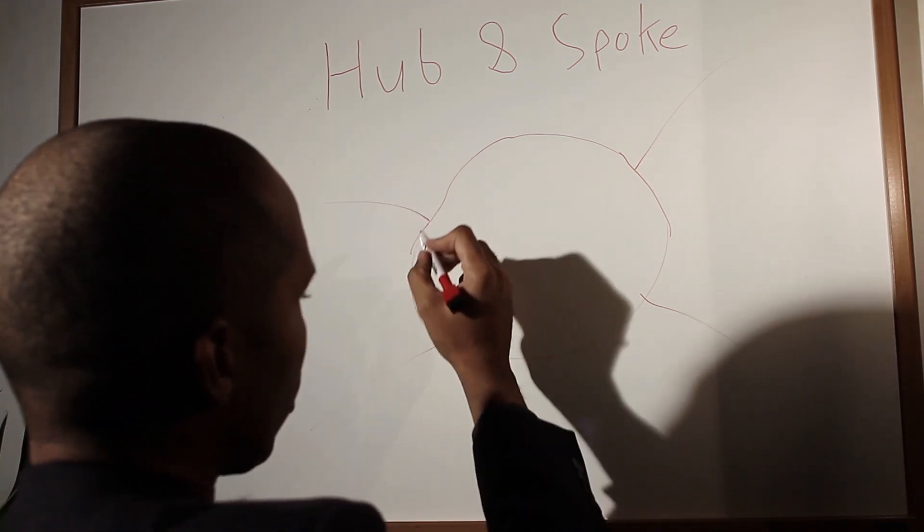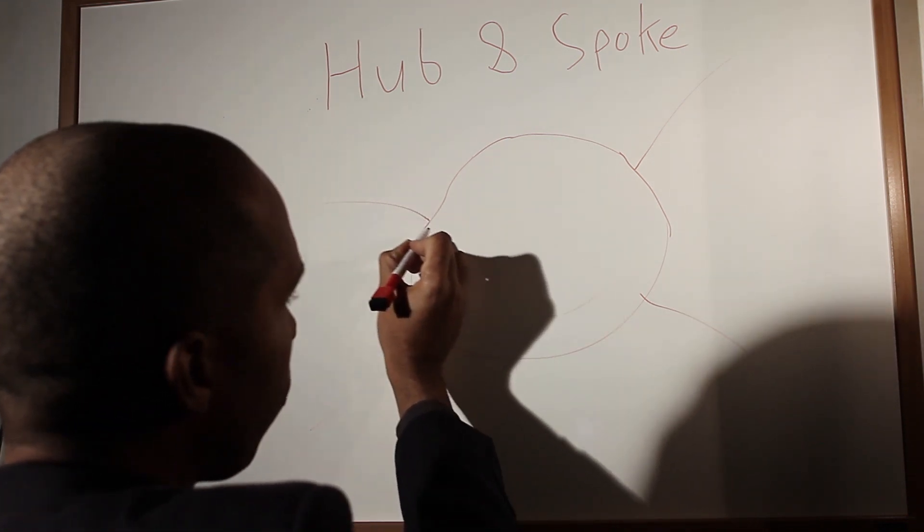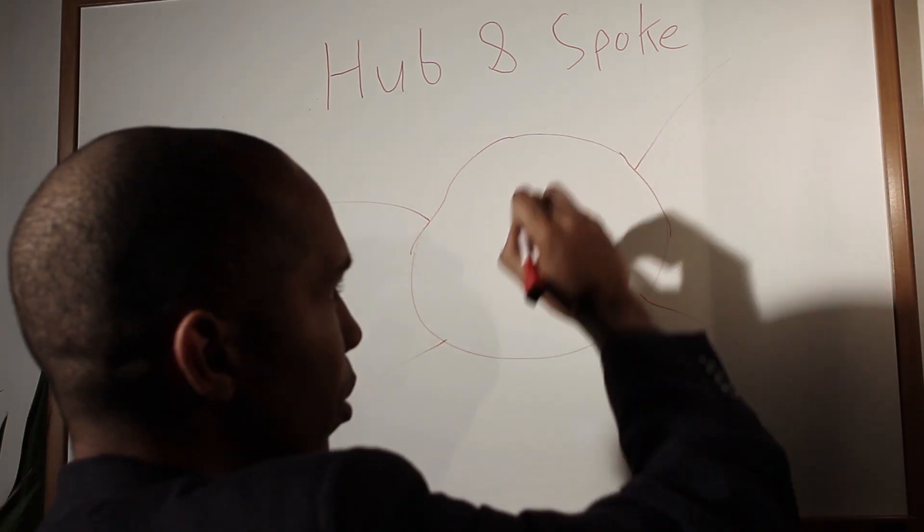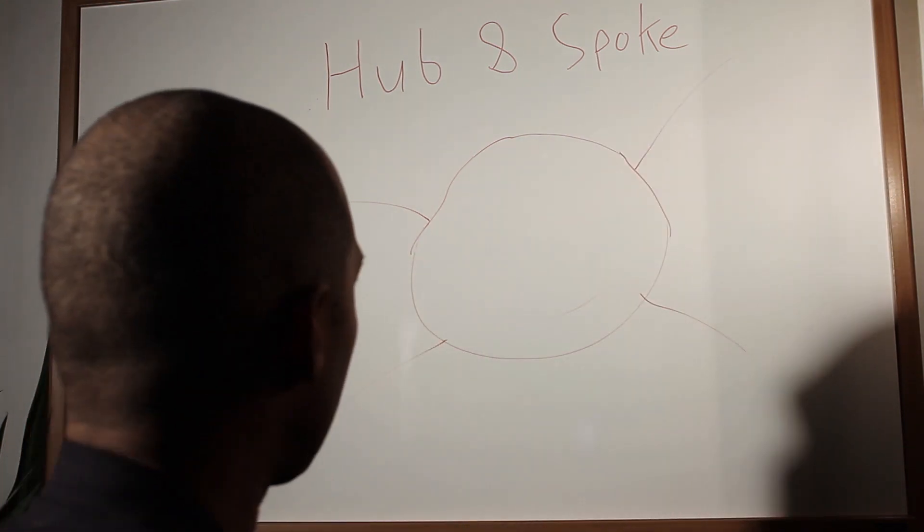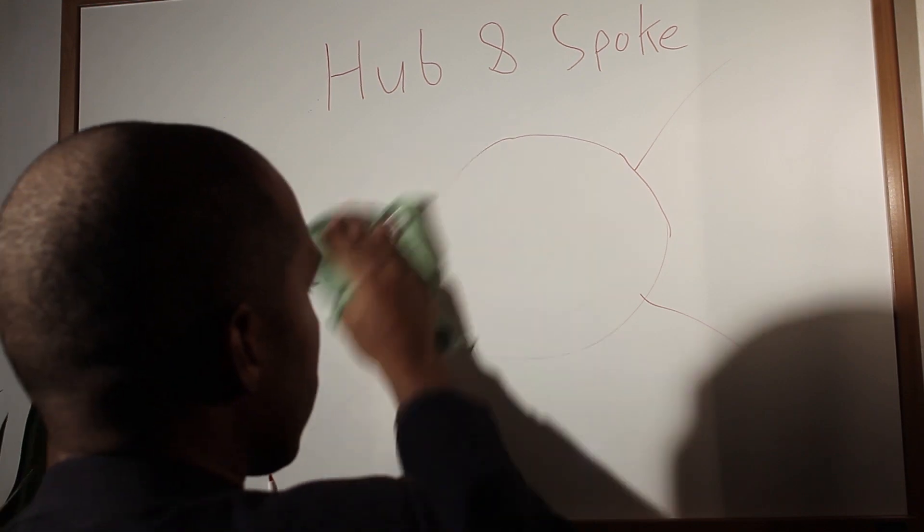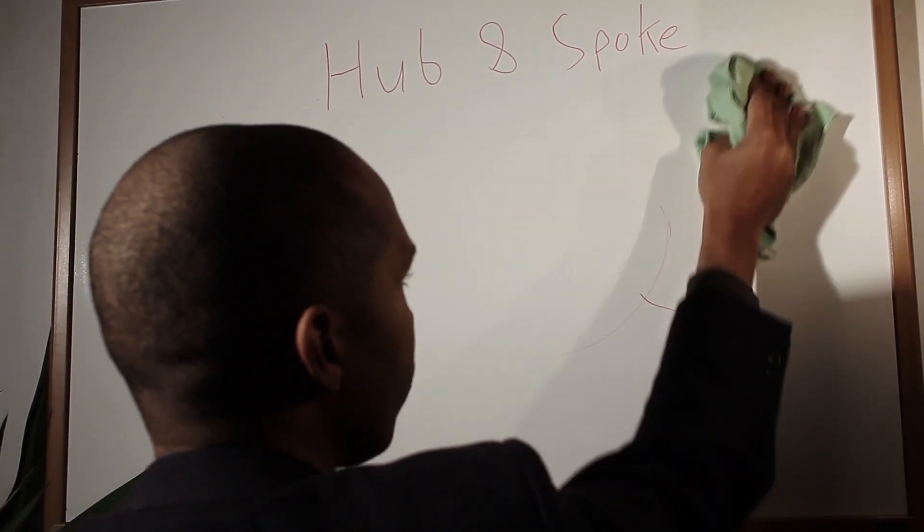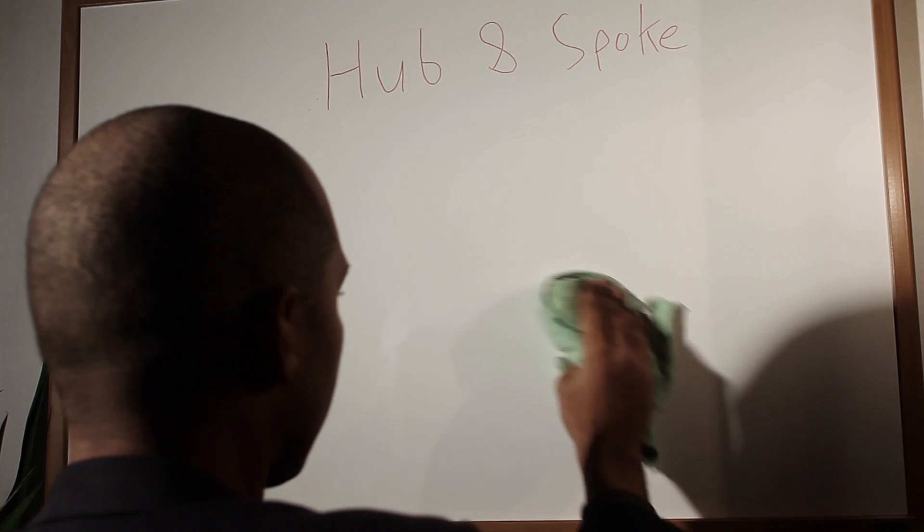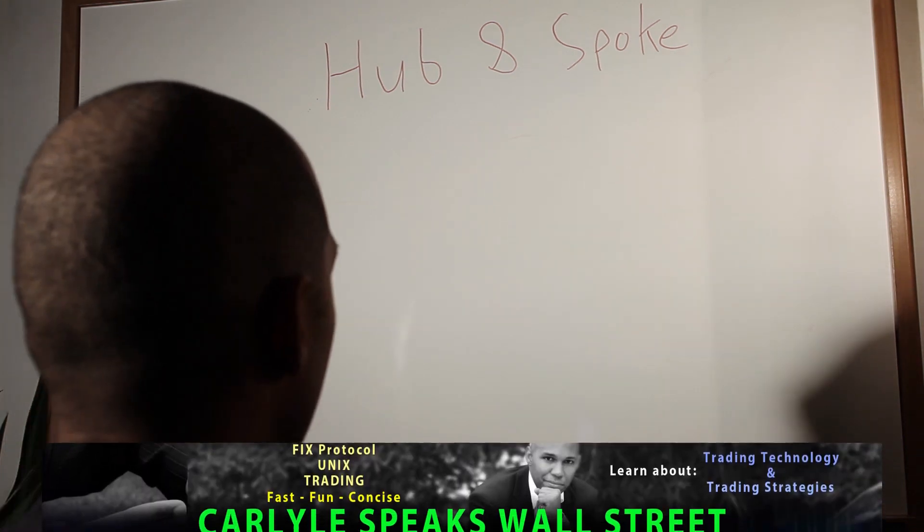It's a network where you have a single point where you can access all of these exterior destinations. But to better understand what a hub and spoke network is about, let's start from square one. Why would we even need this in the first place? So let's start up.